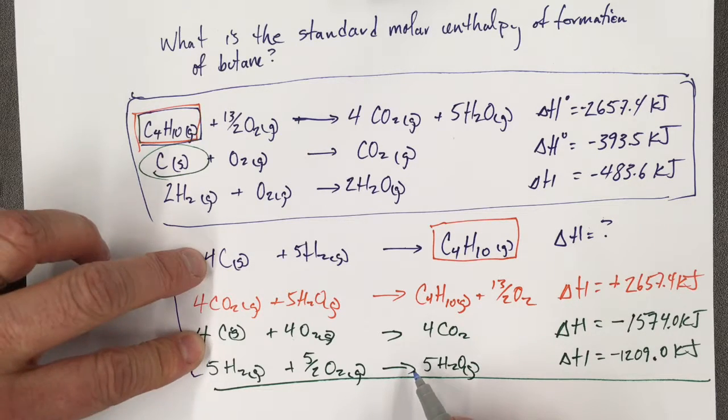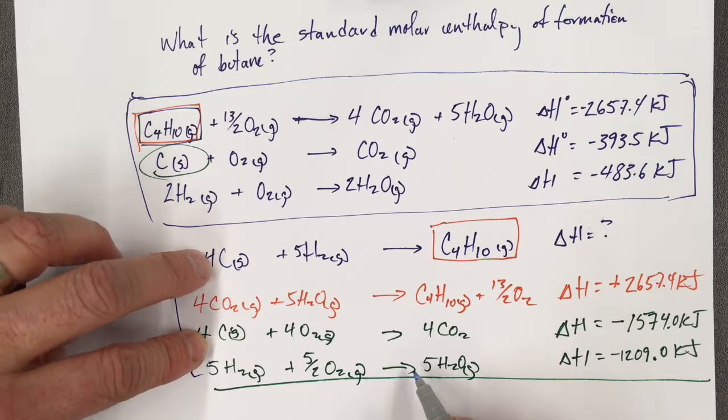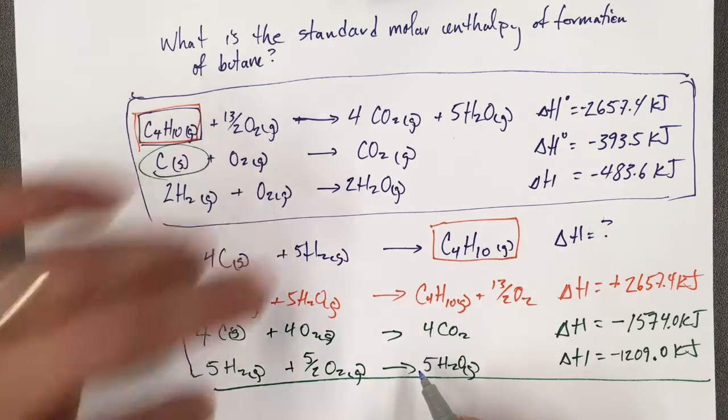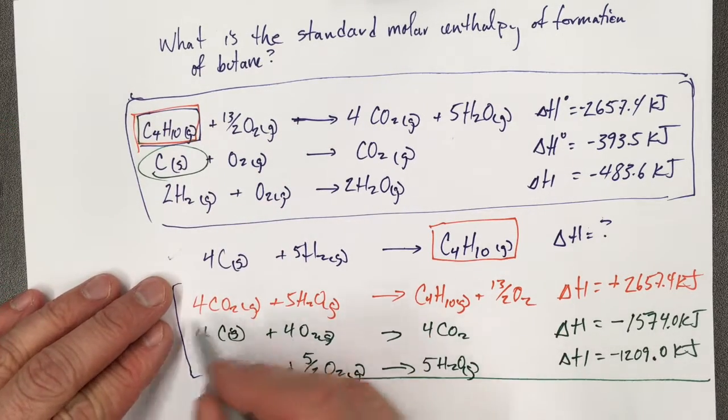I have 4 carbons and 4 carbons, so that's good. I'd like to leave that. I'd like to have my 5 hydrogens and 5 hydrogens in the reactants. So those I want to leave.